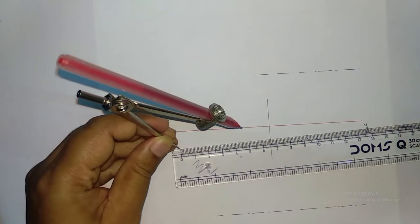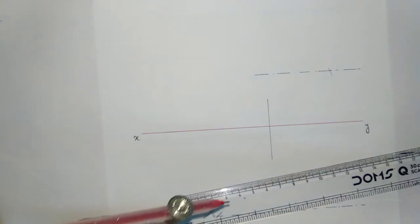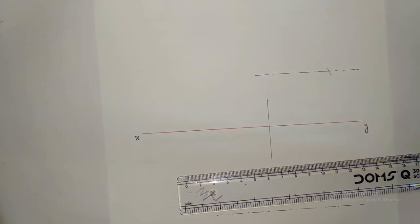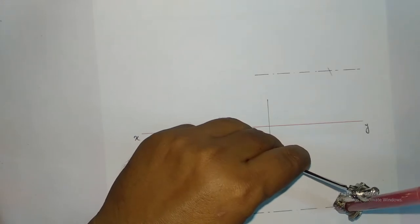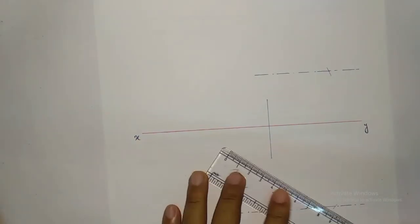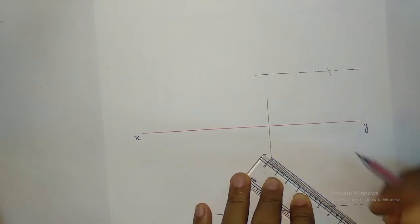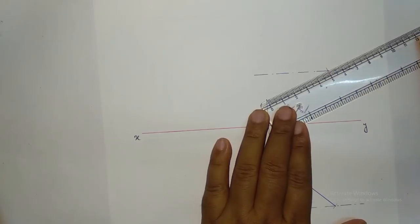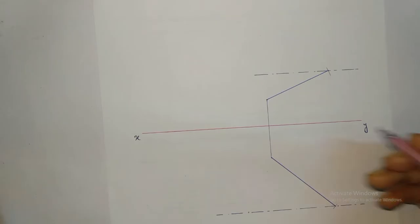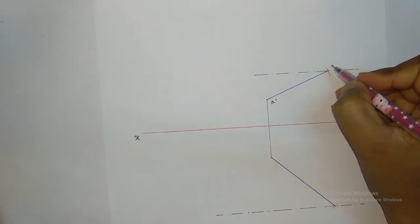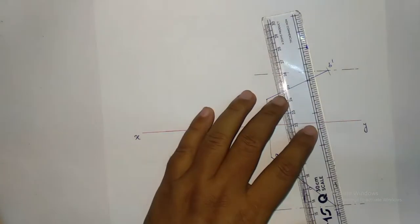The front view is 50mm, so first you measure 50 and taking this as a radius you draw an arc. The top view is 60mm, so from here to here you measure 60 and draw an arc. This intersection gives you the length of the front view and top view — this is A-dash, this is B-dash, this is A, and this is B.